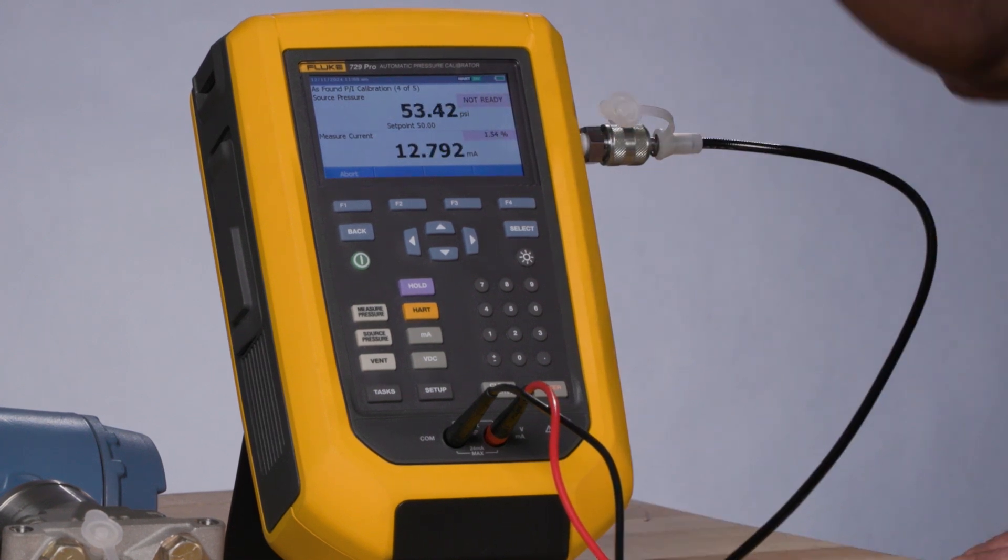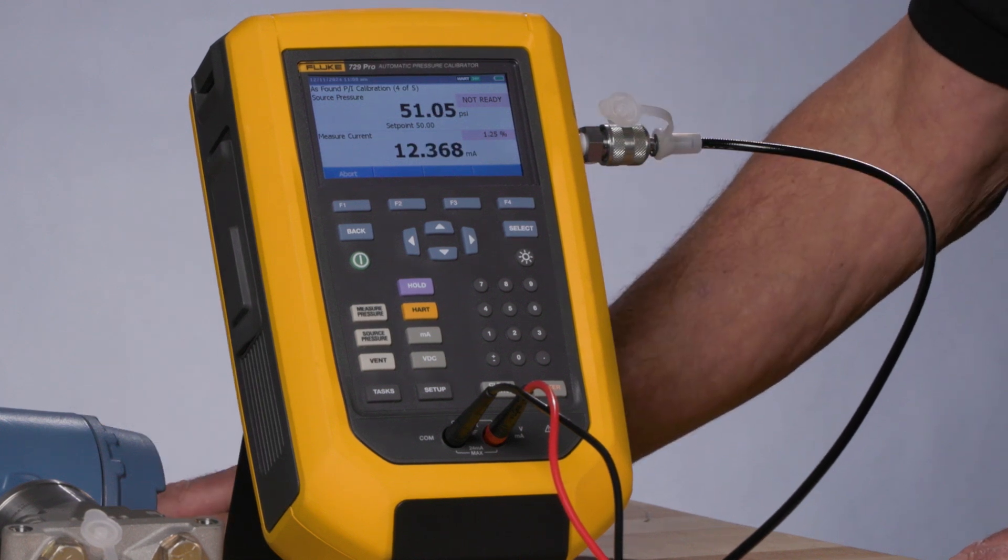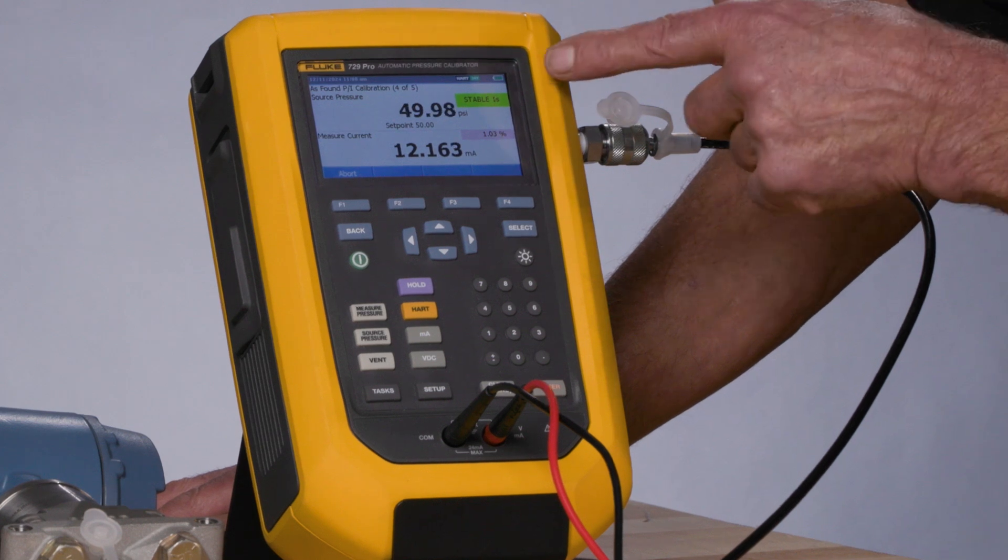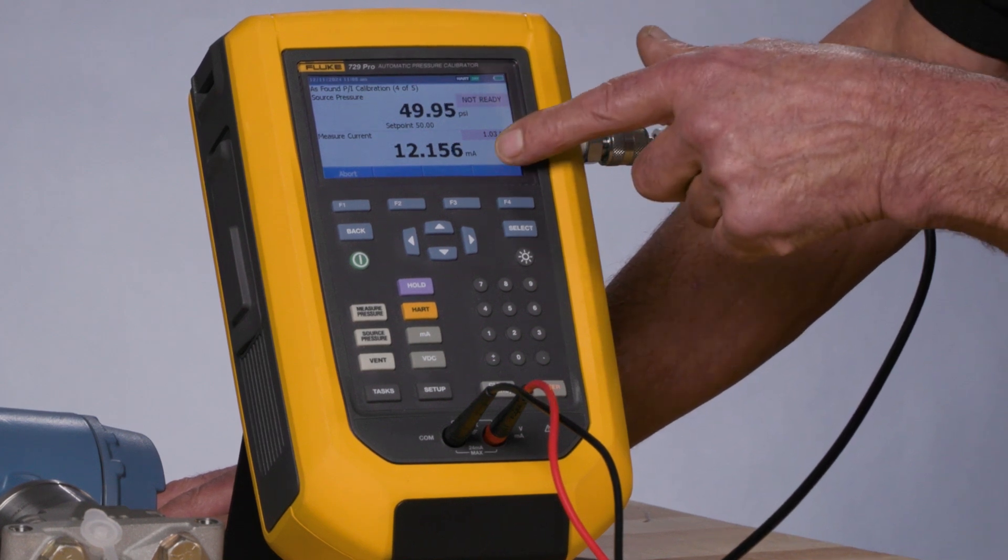Now after 100 psi, it's reducing the pressure to 50 psi, to recheck the 50% point for hysteresis. Stable, error percent, and the milliamp value being recorded.